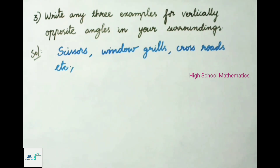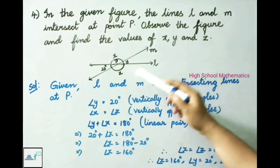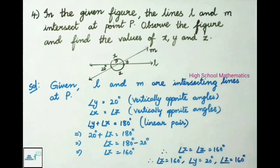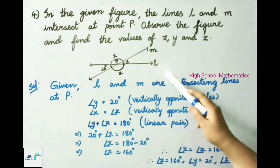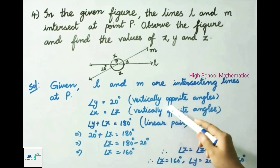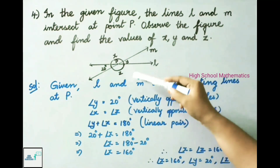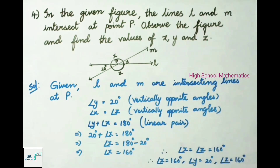Question number 4: In the given figure, the lines L and M intersect at point P. Observe the figure and find the values of X, Y, and Z. Given L and M are intersecting lines at P. From the figure, angle Y is equal to 20 degrees, since both are vertically opposite angles. Angle X and angle Z are also vertically opposite angles, so angle X is equal to angle Z.